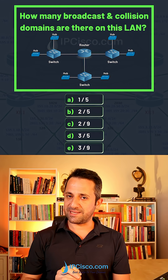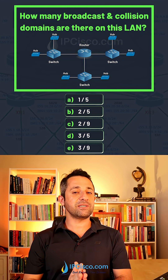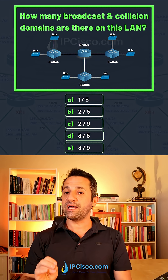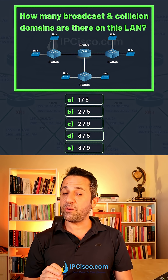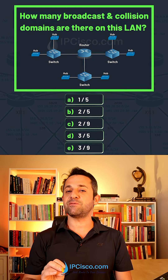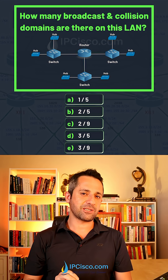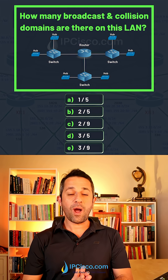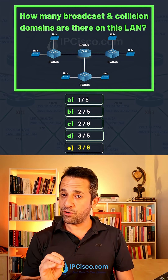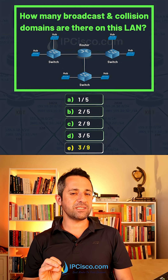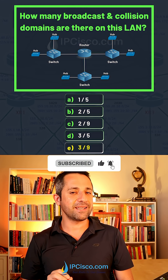Now let's count collision domains. We have three switches and one router, and each router interface is one collision domain. Also, each interface of a switch is one collision domain. Here we have three switches and each switch has three interfaces. One of these interfaces is also connected to the router. When we count the collision domains, we count the interfaces of switches. Each switch has three interfaces, so three and three and three — we have nine collision domains.